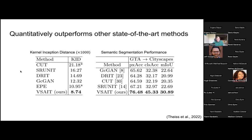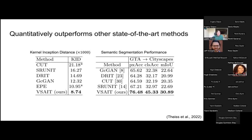We compare quantitatively against baseline methods using two metrics. First, kernel inception distance (KID), which measures the distance between distributions of image features extracted using the Inception-V3 network — lower numbers are better, meaning we better match the target domain distribution. Second, we use semantic segmentation performance of a network trained on Cityscapes applied to the translated data to predict segmentation classes — higher numbers reflect better performance.